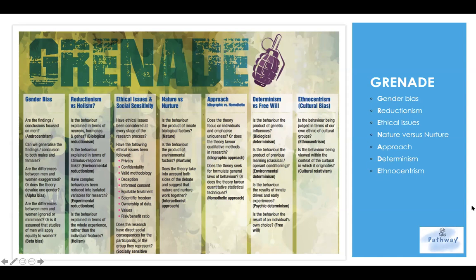If it's the holistic approach, it asks for the bigger picture — behavior explained in terms of the whole experience rather than individual features or genetics. When it's reductionism, it focuses on one small thing, like genetic factors or environmental factors. But if it's holism, it looks at various aspects such as social, cultural, and experiences.